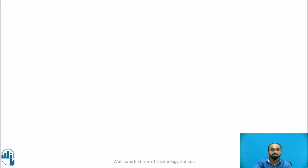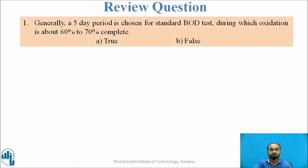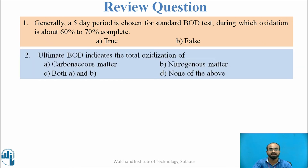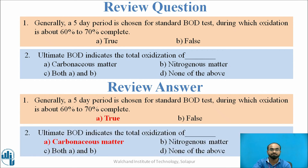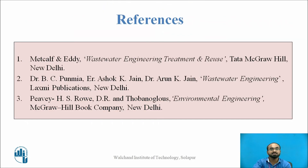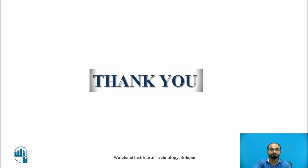Let us look at some review questions. The first: ultimate BOD indicates the total oxidation of — carbonaceous matter, nitrogenous matter, both, or none of the above? The answer is: a five-day period is chosen for the standard BOD test, during which oxidation is about 60 to 70% complete — this is a true statement. Ultimate BOD always indicates the total oxidation of carbonaceous matter. Thank you.